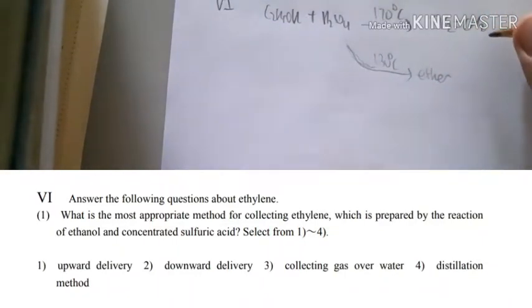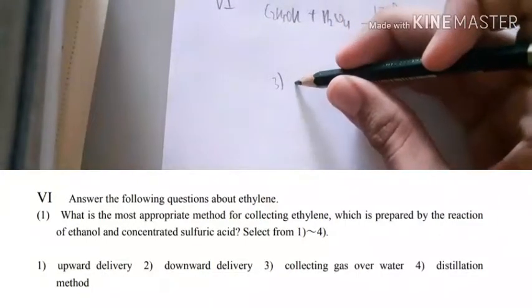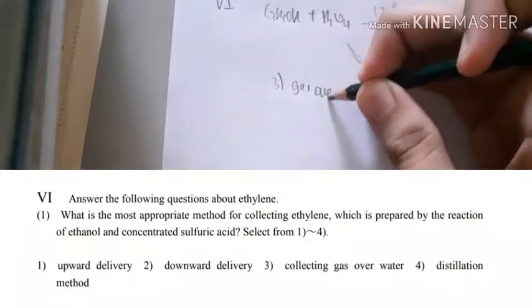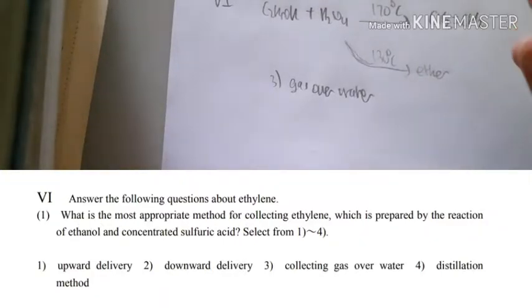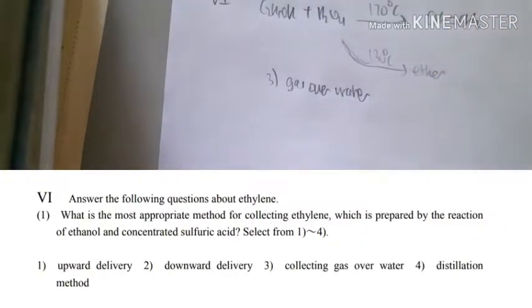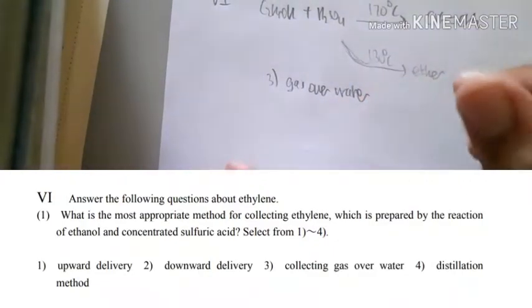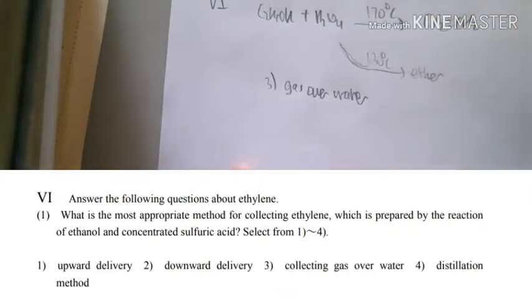Number one, how to appropriately collect ethylene. The answer is collecting gas over water. Remember, ethylene is gas, even though ethanol is liquid and sulfuric acid is liquid. We need to collect the gas over water. That is ethylene.